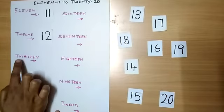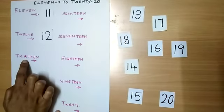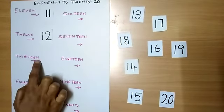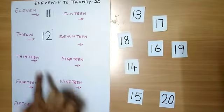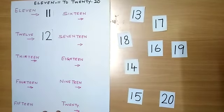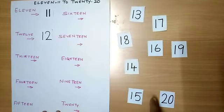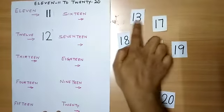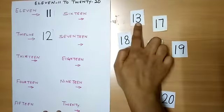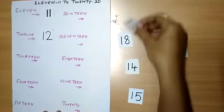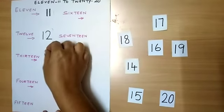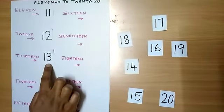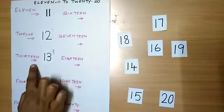T-H-I-R-T-E-E-N. That is 13. So where is number 13? This is number 13. 1 and 3 makes 13. So let me arrange number 13.